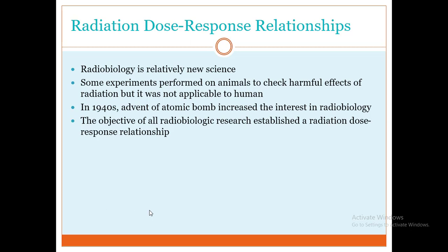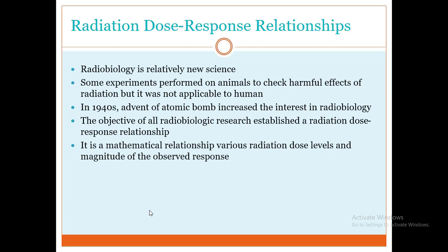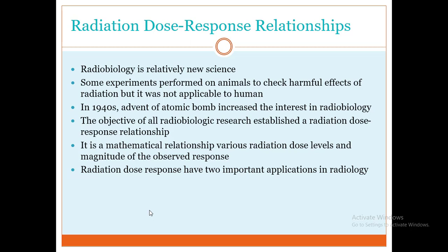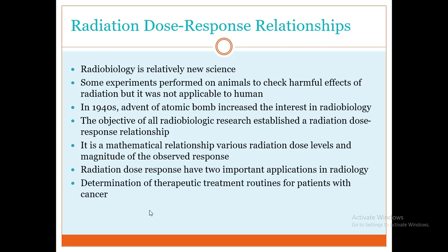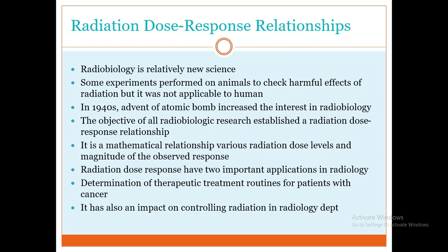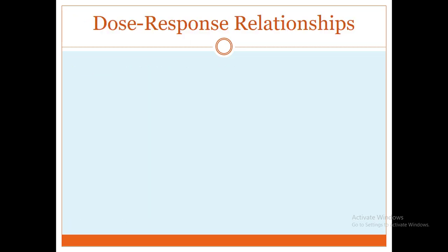The dose-response relationship is a mathematical relationship, seen graphically, between various radiation dose levels and the magnitude of observed responses. It has two important applications. One is to determine the therapeutic treatment routine for patients in cancer — especially in radiation oncology — to observe the response. The second application is in radiology and nuclear medicine departments, where we also look at stochastic and deterministic effects and how they manifest in the radiation dose-response relationship.